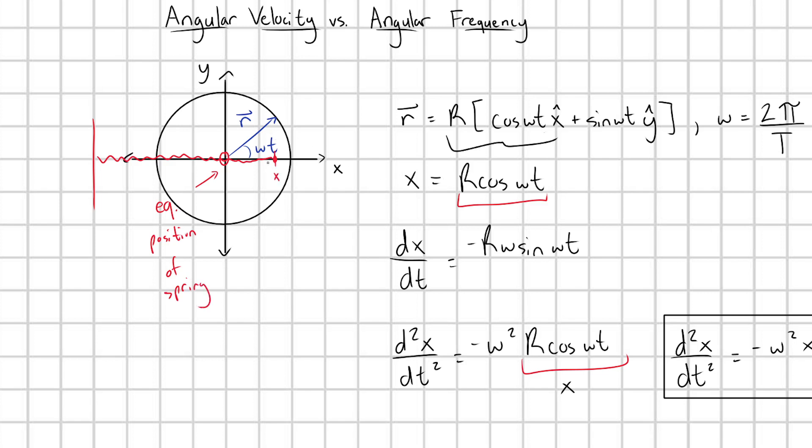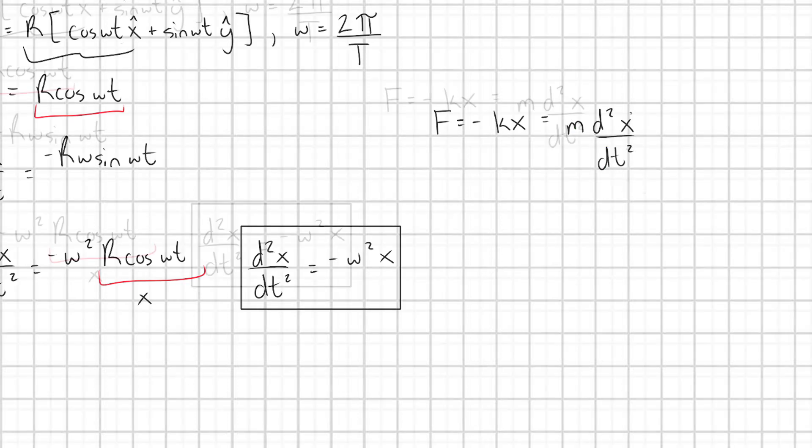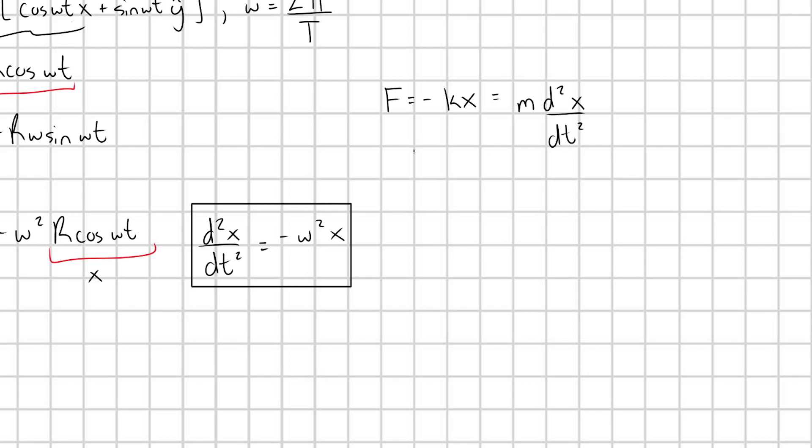And so if I'm at some location x here, then Hooke's law tells me that the force produced by my spring is going to be minus kx. So I call this my restoring force, I have F equals minus kx. And by Newton's second law, this is going to be equal to the mass of my particle times its acceleration, d squared x dt squared.